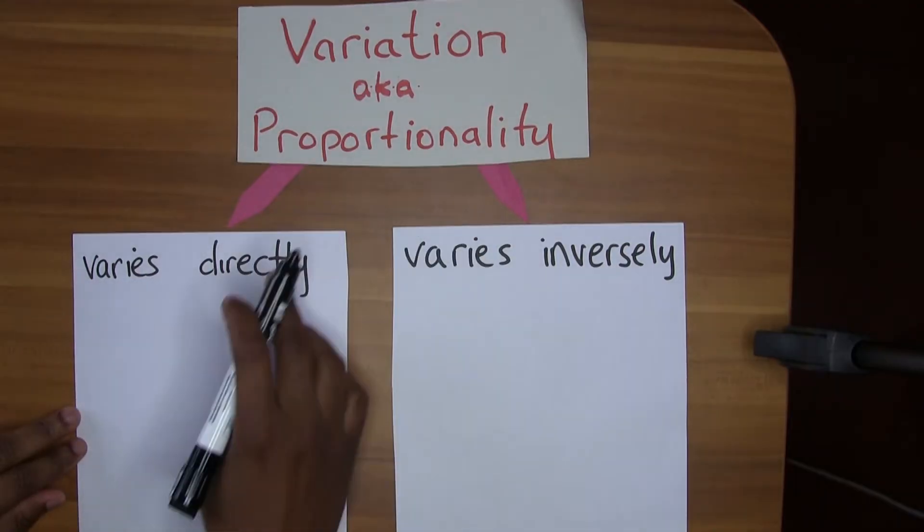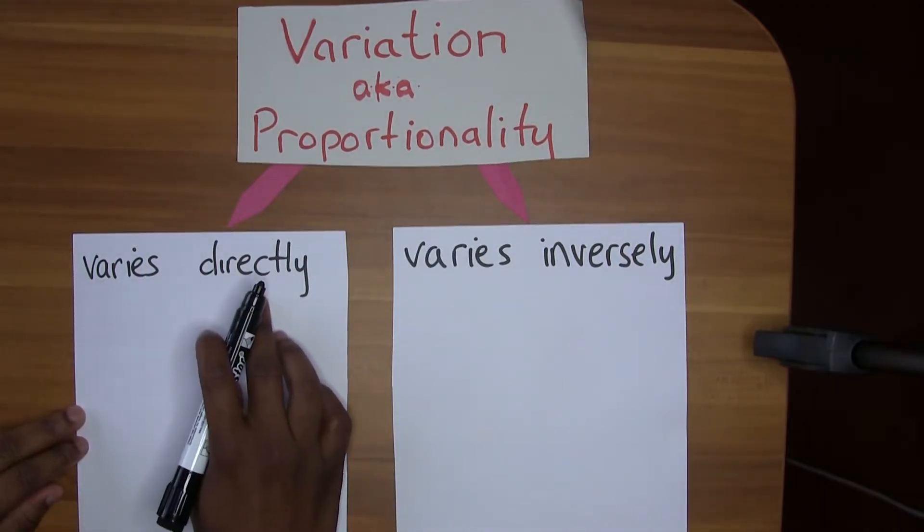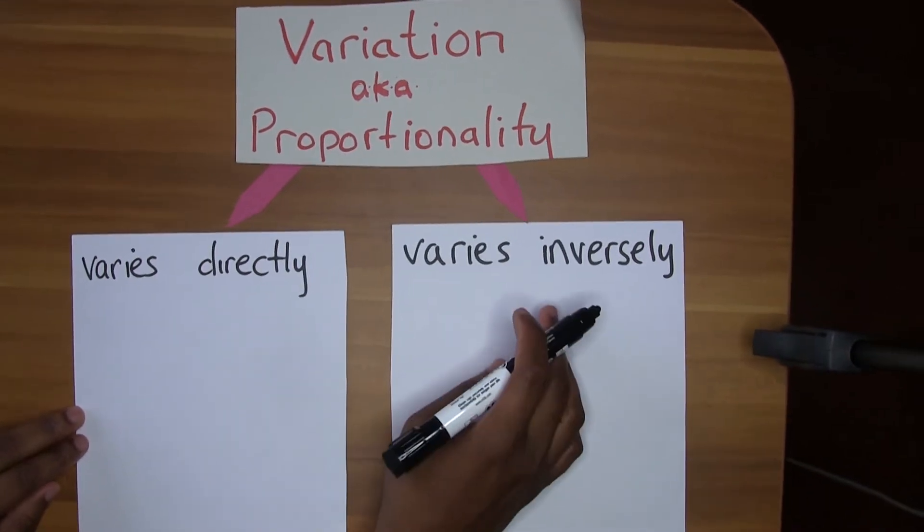Alright, so let's do variation — variation, also known as proportionality. There are two types of variation: one is when it varies directly, and one is when it varies inversely.